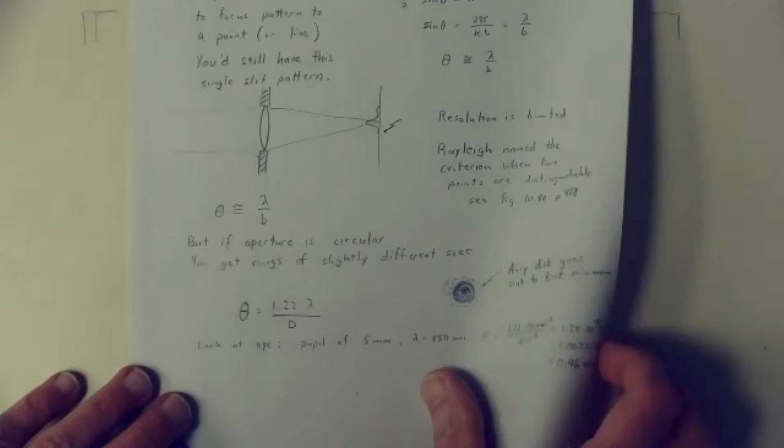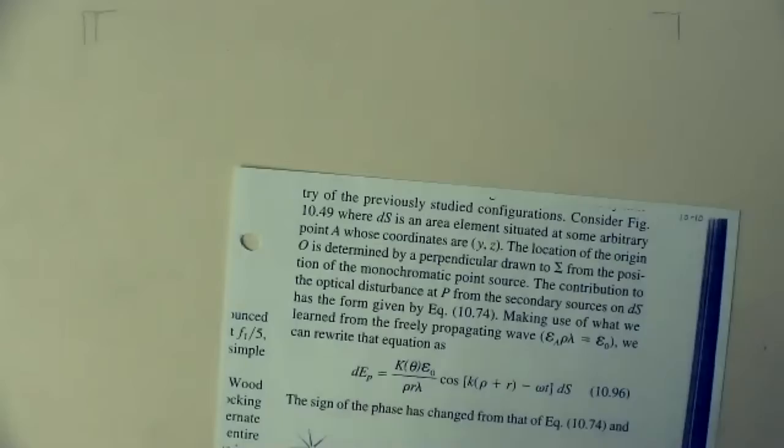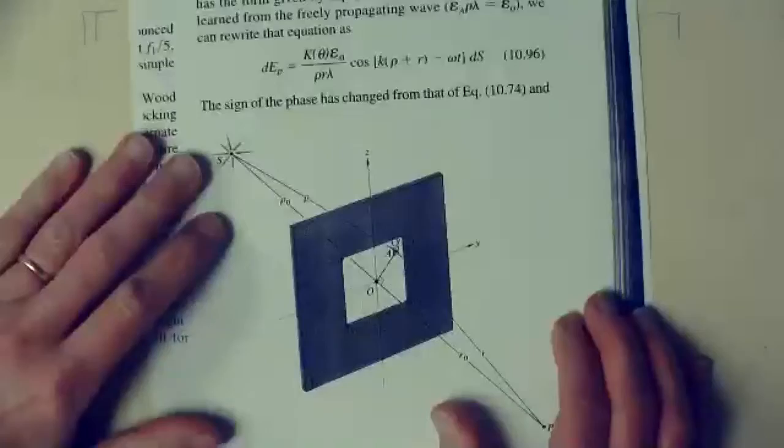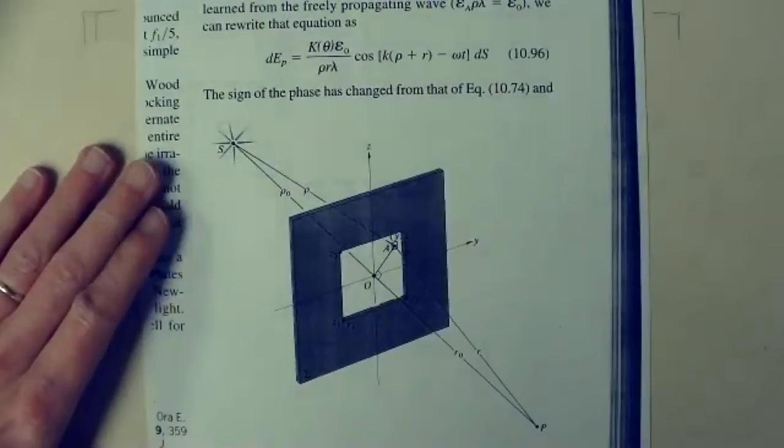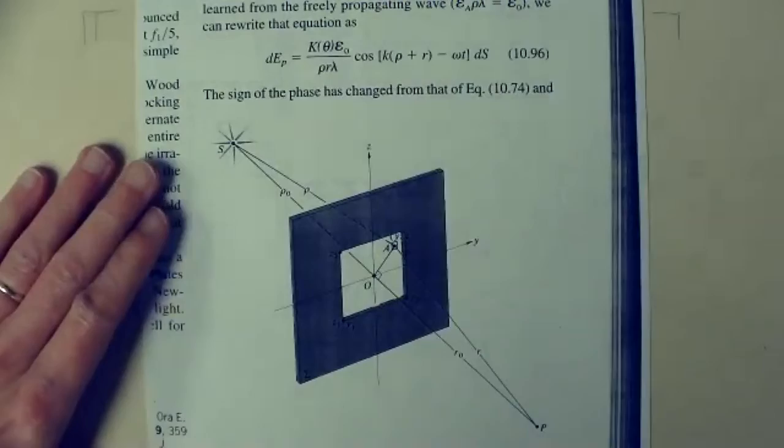Now we move on to a really challenging topic: Fresnel diffraction from rectangular apertures. This is the near-field case, as opposed to Fraunhofer diffraction which is the far field. The math is going to be even worse than the vibration curve.